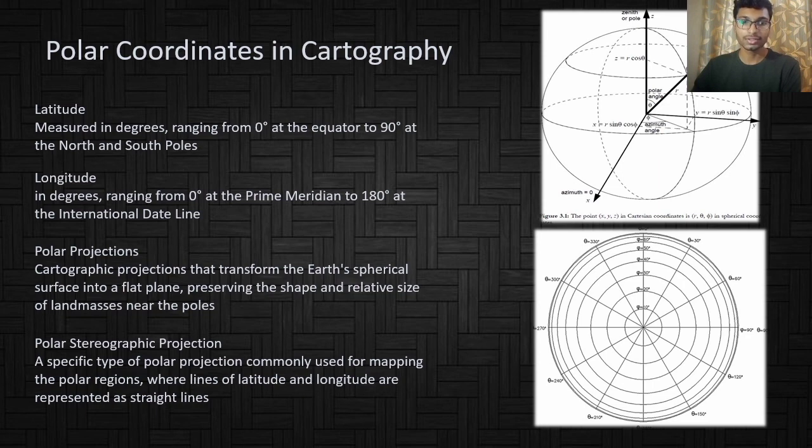Polar projections are cartographic projections that transform the Earth's spherical surface into a flat plane, preserving the shape and relative size of land masses near the poles. Polar stereographic projection is a specific type of polar projection commonly used for mapping the polar regions, where lines of latitude and longitude are represented as straight lines.